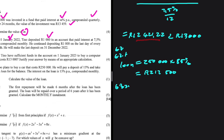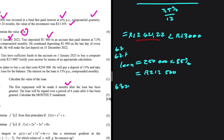6.3.2: The first payment will be made six months after the loan has been granted, and the loan will be repaid over six years. We need to note that he only starts repaying the loan six months after it was granted, so during those five months the loan was accumulating interest. We consider five months because in the month you take the loan, no interest accumulates.